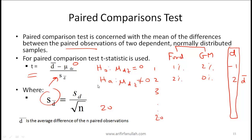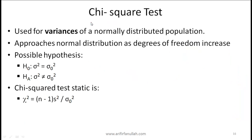Once you have the t-statistic, you again compare it with critical values determined by your significance level, and decide whether to reject or fail to reject the null hypothesis — exactly as in the earlier tests. The chi-squared test is used to test hypotheses about the variance of a normally distributed population.